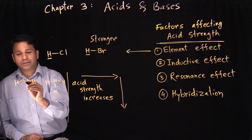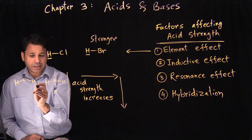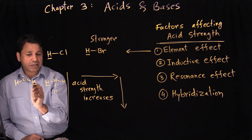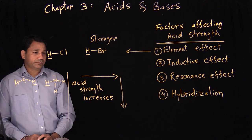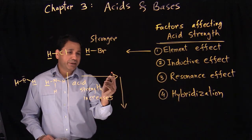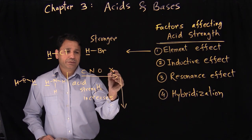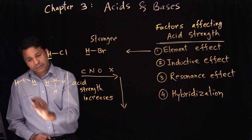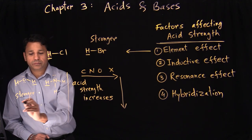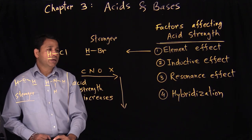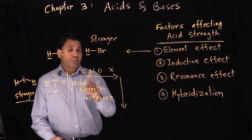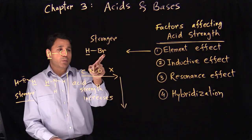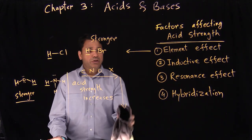Again, identify your acid — the hydrogen. The difference is hydrogen attached to oxygen versus hydrogen attached to nitrogen. Going left to right in the periodic table: carbon, nitrogen, oxygen — nitrogen comes first and then oxygen. So water is the stronger acid. Element effect is easy to find out as long as you identify what the real difference is — the element attached to the hydrogen.